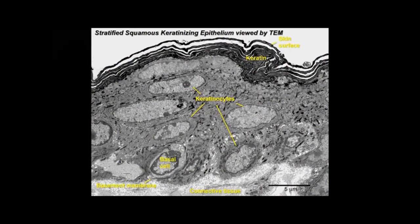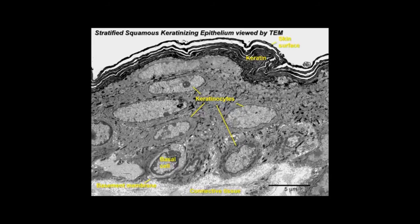Thin skin, as seen here by TEM, contains multiple layers of keratinocytes. Basal cells are regenerative and rest on the basement membrane. Keratinocytes are interconnected by desmosomes and contain an extensive internal cytoskeleton. As cells mature, they are pushed to the surface where they form a hydrophobic layer of keratin.